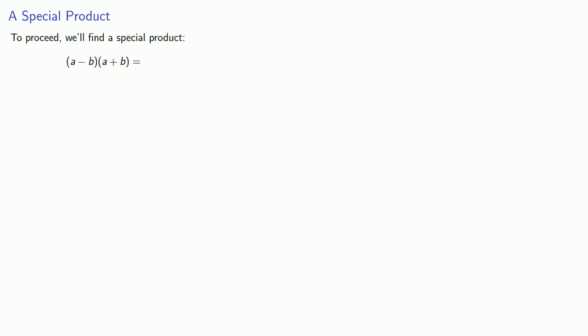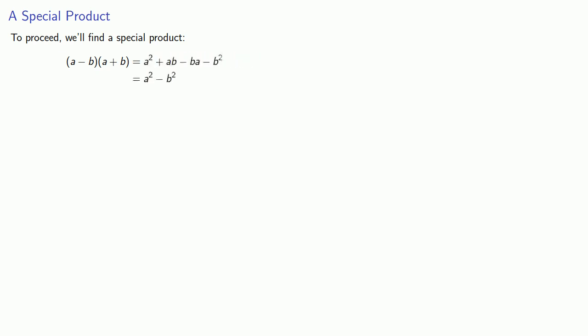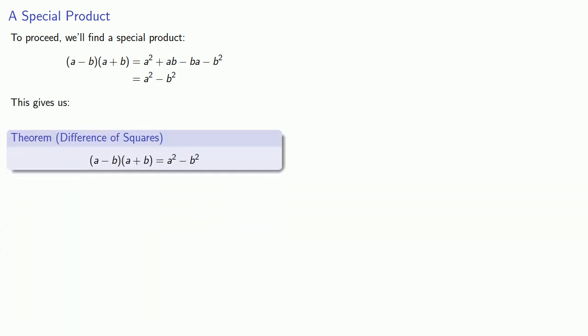To proceed, we'll find a special product: (a minus b) times (a plus b). Finding that product gives us an important result: a minus b times a plus b is equal to a squared minus b squared.